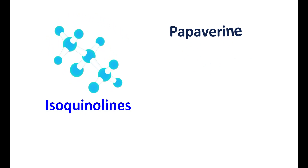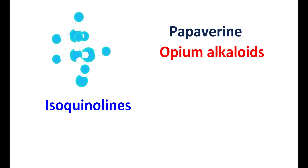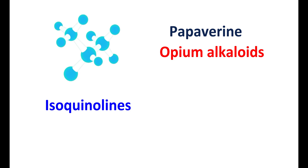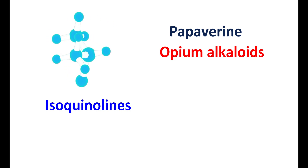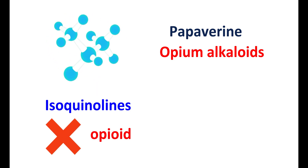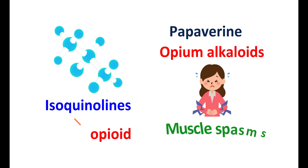Instead, drotavarine belongs to a chemical category of isoquinolines and this medication is related to one of the natural medications, papaverine. Papaverine comes from opium alkaloids and drotavarine is a medication that is related to papaverine. However, drotavarine is not an opiate and it is particularly used to treat muscle spasms.